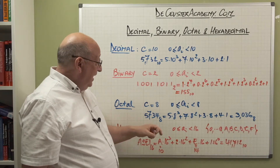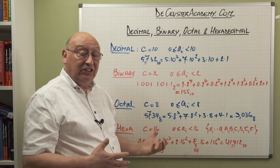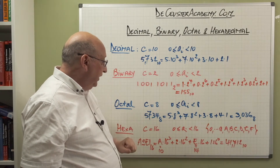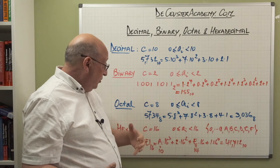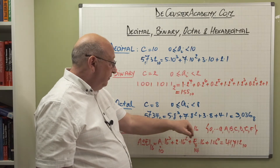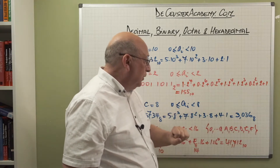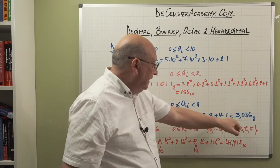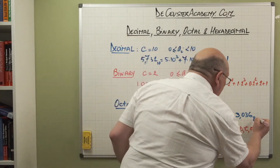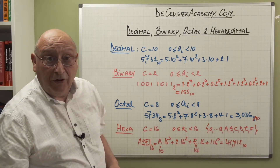For octal numbers the base is 8, and the coefficients are between 0 and 7. When we have the octal number 5734 base 8, we write: 5 times 8^3 plus 7 times 8^2 plus 3 times 8 plus 4 times 8^0, which equals 3036 in base 10.